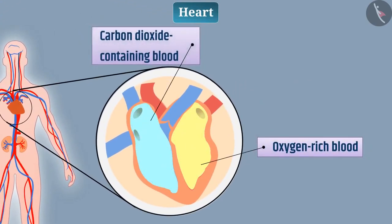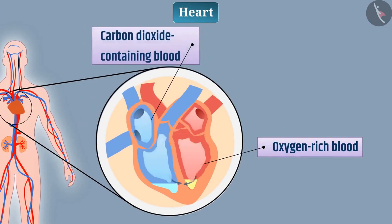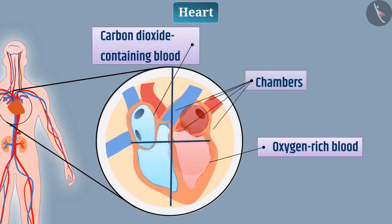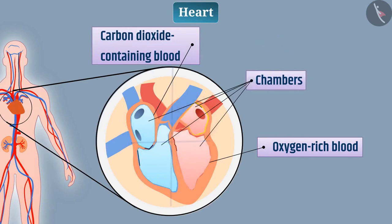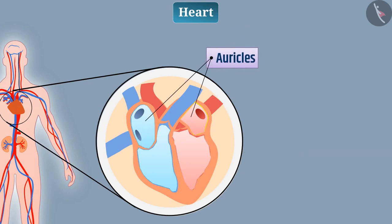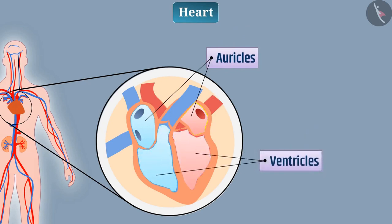Capillaries join to form veins that carry deoxygenated blood from various parts of the body to the heart. The walls of veins are thin and have valves so that blood flows in one direction. The heart is a muscular organ that pumps blood into the vessels. To prevent mixing of oxygen-rich blood and carbon dioxide-containing blood, the human heart is divided into four chambers. The upper two chambers are called auricles and the lower two are called ventricles.